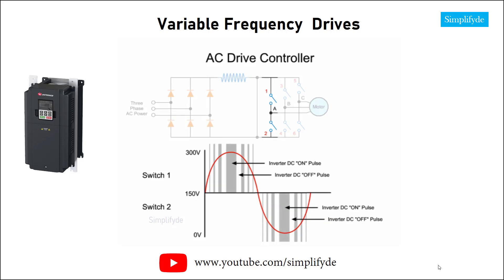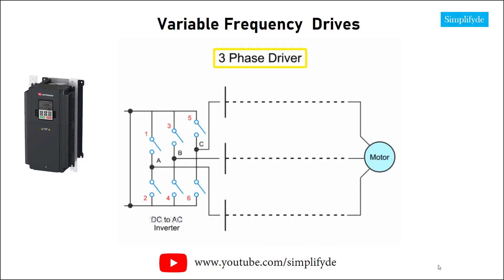The longer a switch is on, the higher the AC output voltage. Conversely, the longer a switch is off, the lower the output voltage. This duration of on-time for each pulse is called pulse width. The time duration and intervals of these DC voltage pulses determine the synthesized AC output voltage and frequency.